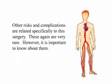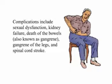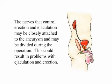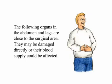Other risks and complications are related specifically to this surgery. These are very rare, however it is important to know about them. Complications include sexual dysfunction, kidney failure, death of the bowels also known as gangrene, gangrene of the legs, and spinal cord stroke. The nerves that control erection and ejaculation may be closely attached to the aneurysm and may be divided during the operation, which could result in problems with ejaculation and erection.